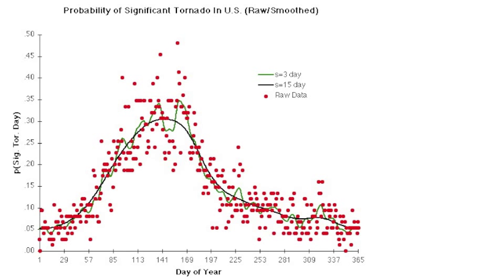Mathematics has also allowed us to calculate the probabilities of having a significant tornado day as a function of the day of year. The raw data can be smoothed by applying a Gaussian to the values, determined by standard deviation.